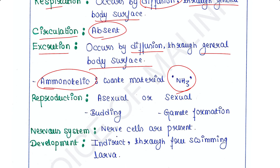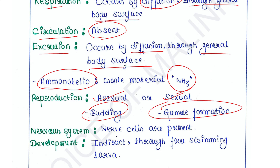Reproduction: they undergo both asexual and sexual reproduction. Asexual reproduction occurs by budding, and sexual reproduction occurs by gamete formation.